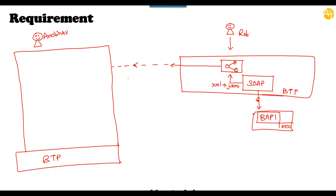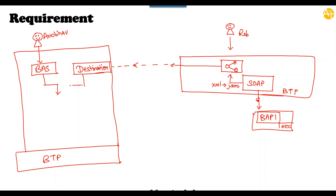The Fiori app should call the Integration Suite API and then be available in the BTP Cloud Foundry environment. Anubhav will be using Business Application Studio as the development tool to consume the API. He will also develop a destination to fetch the data from this API, and referencing that destination, Anubhav will be building a multi-cloud Fiori application.